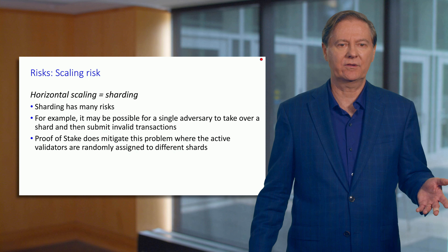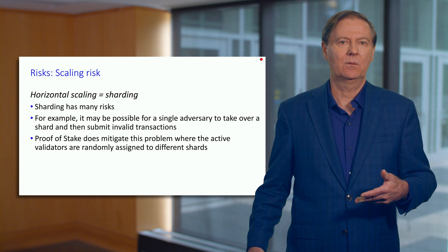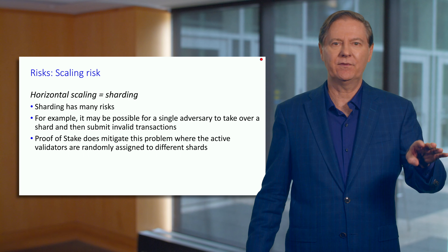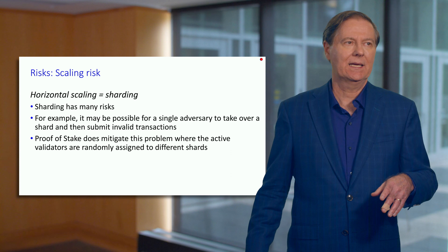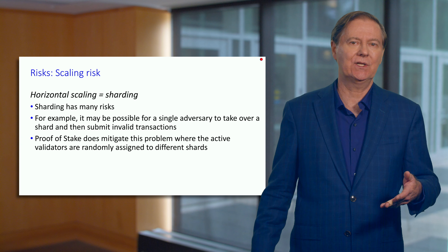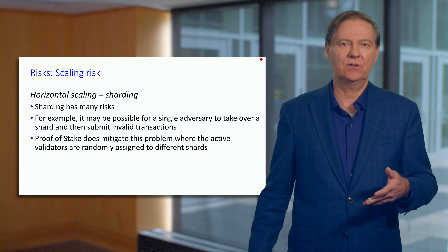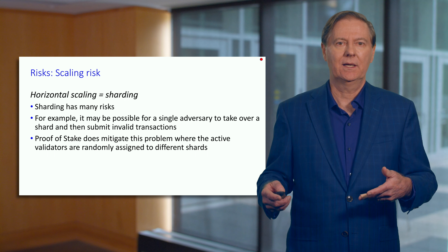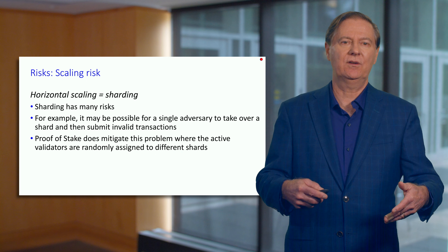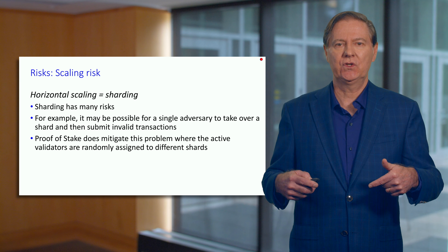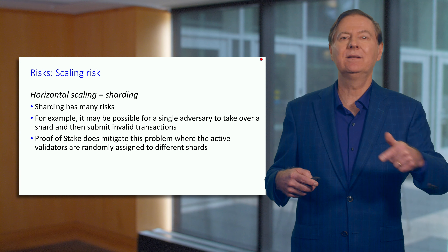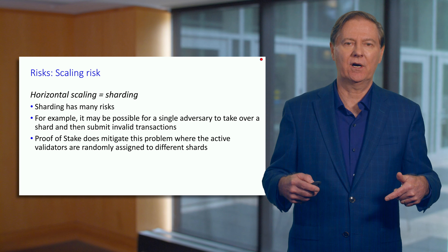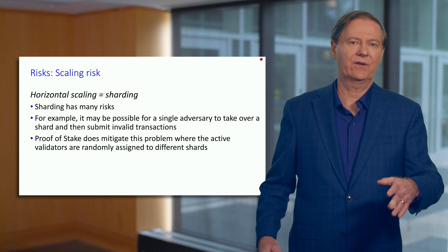Sharding has a lot of risks. One risk is the way that the shards actually communicate with each other — certain shards are assigned to do certain things, so DeFi might be on one shard, but there needs to be communication. There's also a risk that an adversary could take over one of the shards and cause damage. However, I think that risk is low because proof of work is replaced by proof of stake. With proof of stake, given the stake you put up, you would be randomly assigned to propose a block in a randomly chosen shard. The idea of amassing enough computing power to take over a shard is low probability, but it is still a risk to consider.